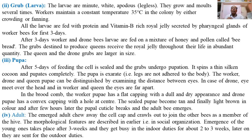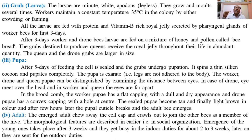The larva grows and becomes mature, passing through several molting stages and attaining maximum size as a full-grown larva, then transforms into the next phase of the life cycle — the pupa. After three days, worker and drone larvae are fed bee bread — a common food containing only pollen and honey — likely due to their greater numbers in the brood comb.